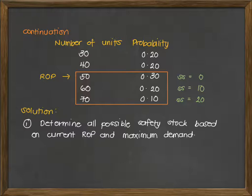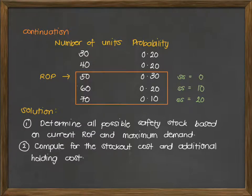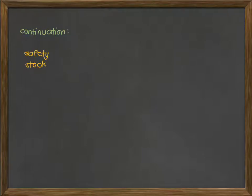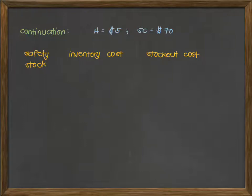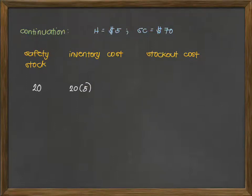Once we have identified the safety stock values, the next step is to compute for the stock out cost and additional holding cost. We have the following columns in our solution: safety stock, inventory cost, and stock out cost. We are given that holding cost is $5 per unit and stock out cost is $40 per unit. For a safety stock of 20 — the maximum safety stock the company can hold — this will incur an additional holding cost of 20 times $5, so an additional $100 for inventory.